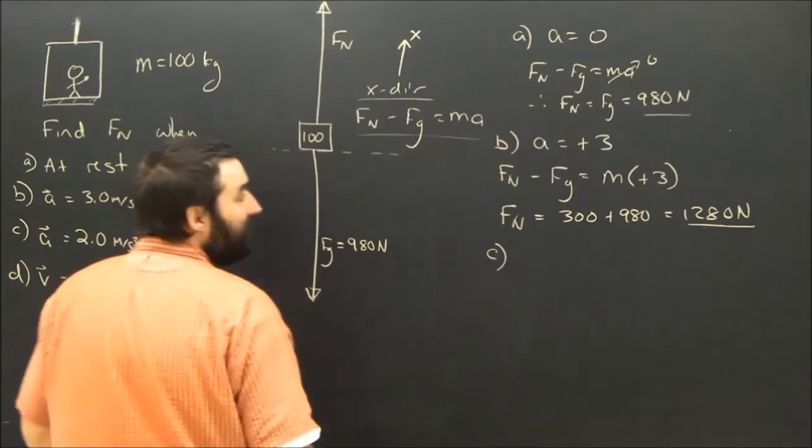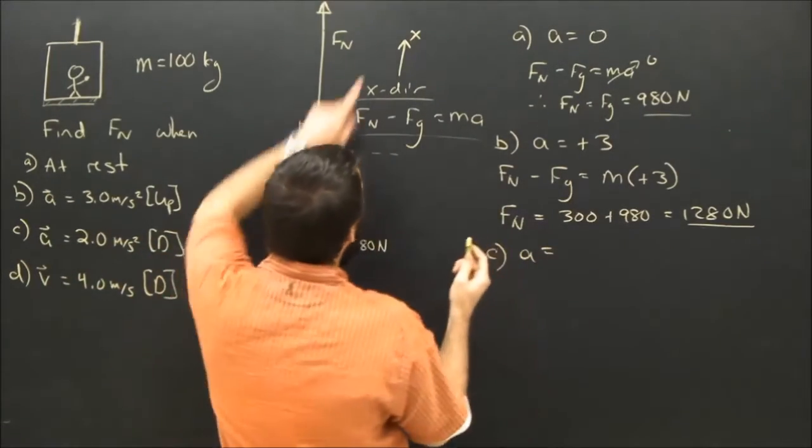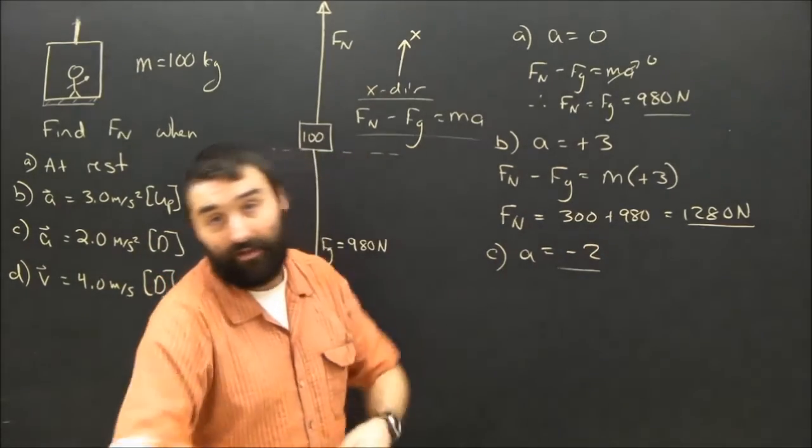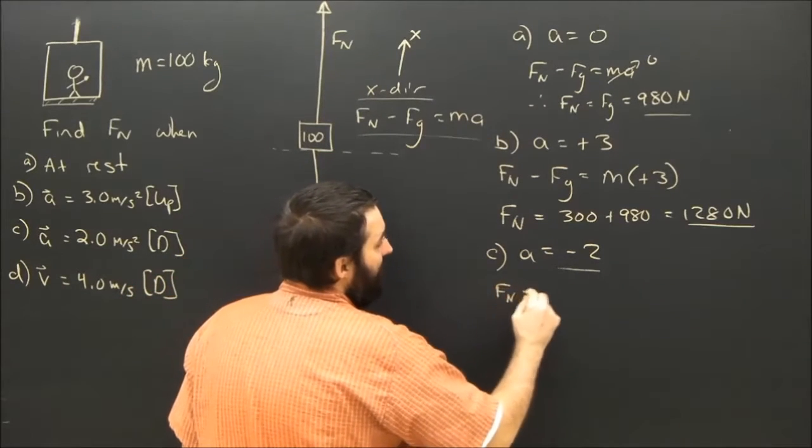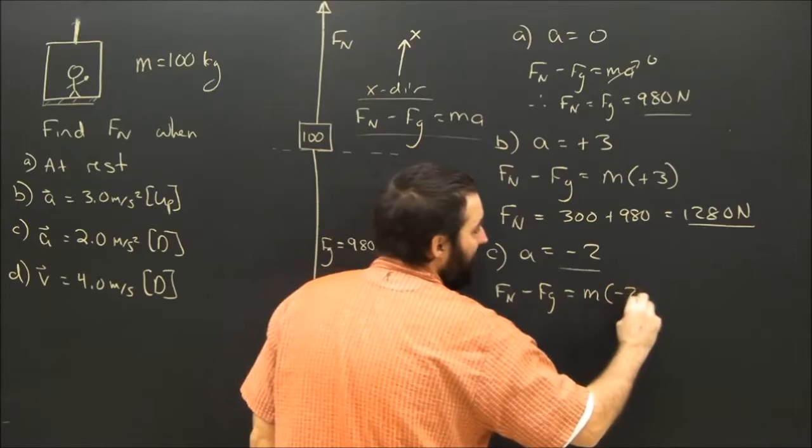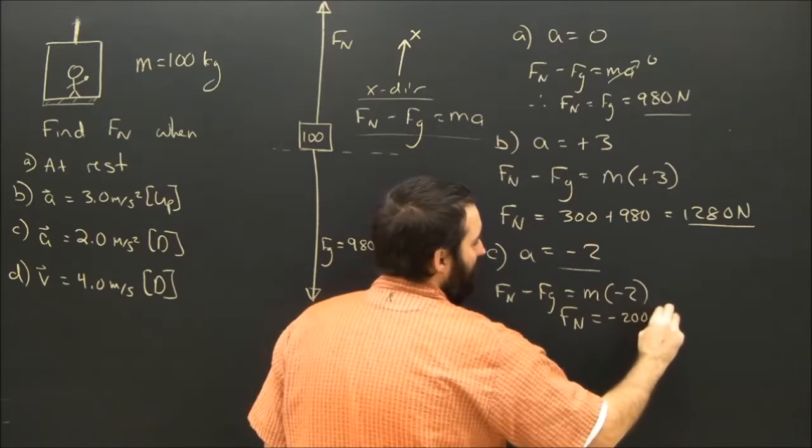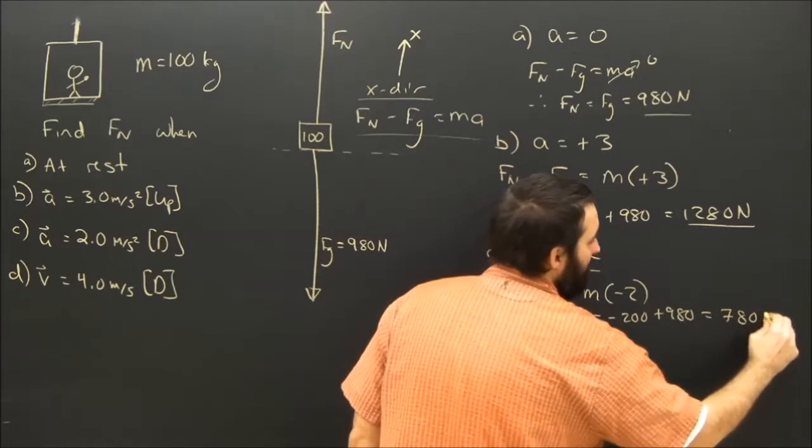For part C, the acceleration is 2 meters per second squared down. What's the difference for that? I'm going to write in that down, so I've got to put the negative. Of course, if I leave off my negative, I'm going to get the total wrong answer. Fn minus Fg equals m times negative 2 this time. So the normal force is negative 200 plus 980. It is 780 newtons.